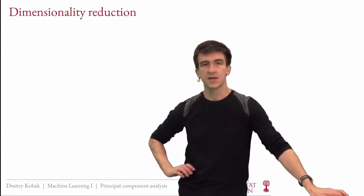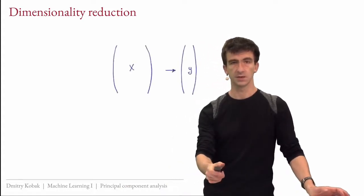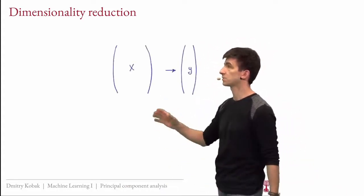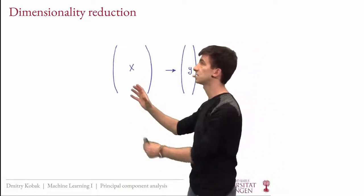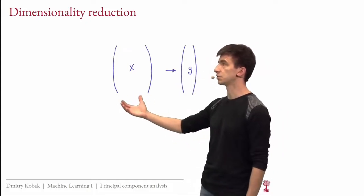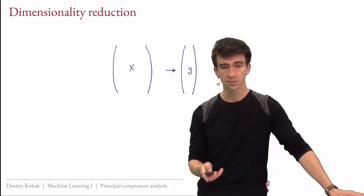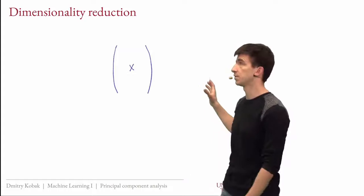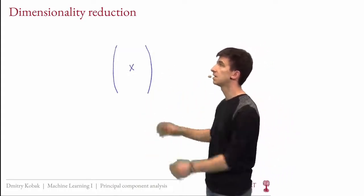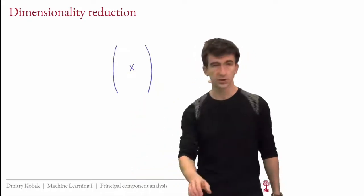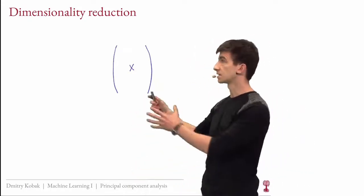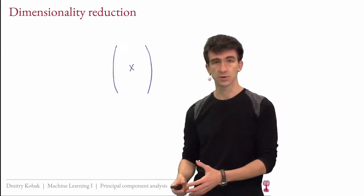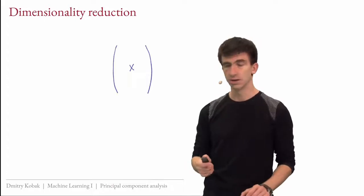Hello and welcome to lecture 10 of our introduction to machine learning course. Today we're going to talk about PCA, principal component analysis. Let me start with the same reminders as last time: we spent a lot of time talking about supervised learning where we have input data X and output data Y, and the task is to learn the mapping. We also started talking about unsupervised learning where we don't have any Y, so we're not predicting anything — we just have data matrix X and try to learn some structure present in the data. This is not a prediction problem anymore; it's an exploration problem.